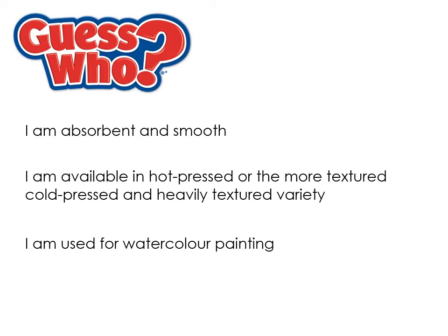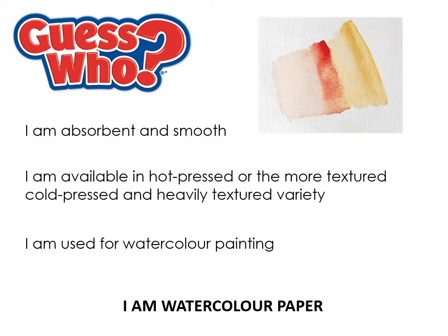Watercolor paper is absorbent and smooth — it can be more textured or quite smooth. It's used for watercolor painting. It's thick and very absorbent, able to handle a lot of moisture, because when painting with watercolors you use a lot of water and you don't want the paper to break down, shrivel, or ripple. Watercolor paper maintains its shape quite well.